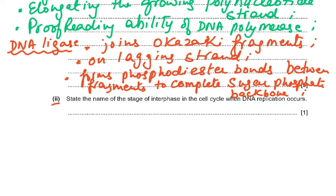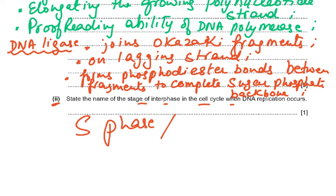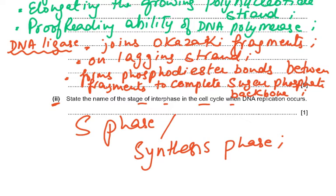A very direct question: state the name of the stage of interphase in the cell cycle when DNA replication occurs. That is the S phase. S phase stands for synthesis phase. If you wrote 'S phase' or 'synthesis phase', both were correct.